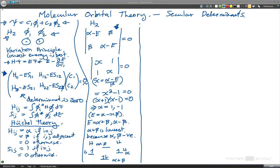So that means that the energy of two hydrogens is equal to two alpha and the energy of H2 is equal to two alpha plus two beta, which is lower.